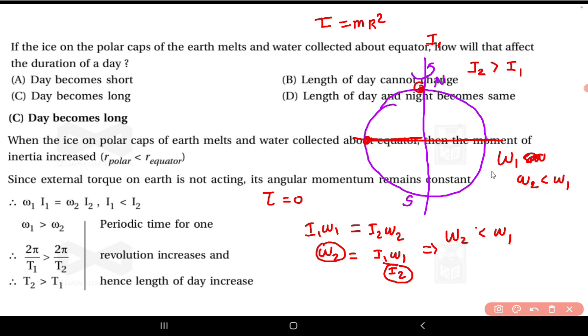Now, ω equals 2π by T. So 2π by T₂ is less than 2π by T₁. The 2π terms cancel, so we can say that T₂ is greater than T₁. That is, the day becomes long.